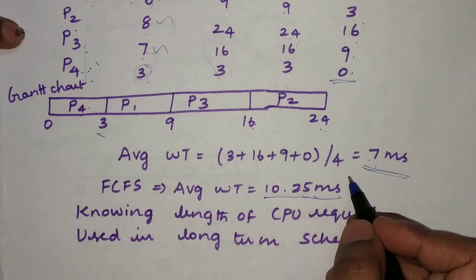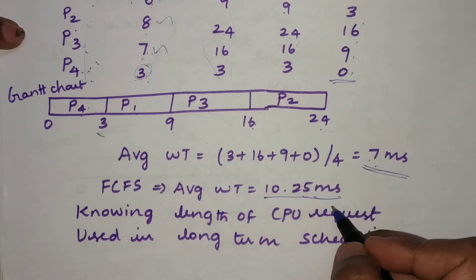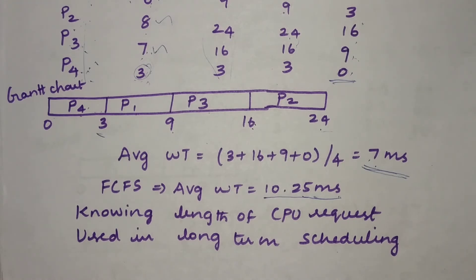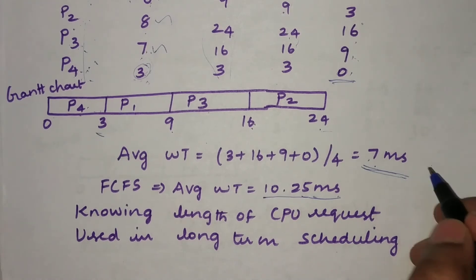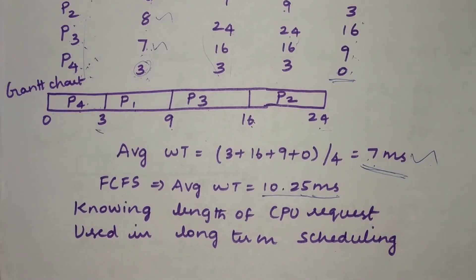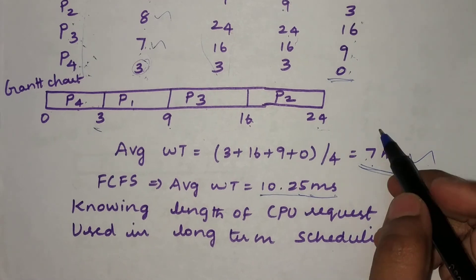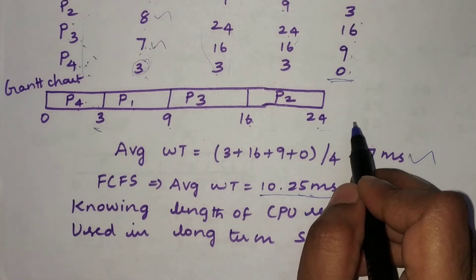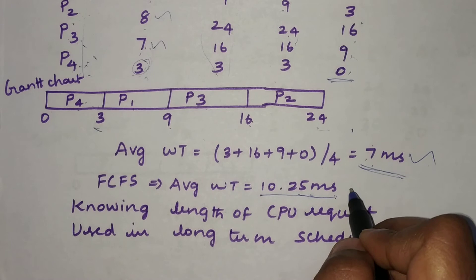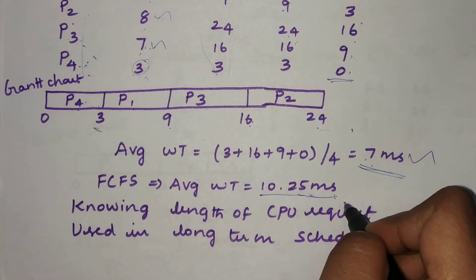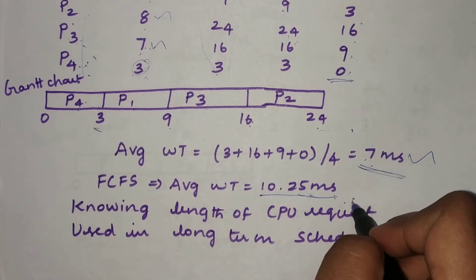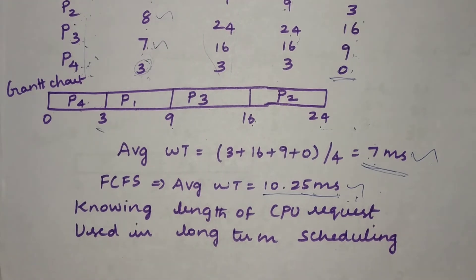Comparing the two algorithms, SJF gives a minimal average waiting time of seven milliseconds versus 10.25 for FCFS. Therefore, Shortest Job First is more optimal and more efficient than First Come First Serve.